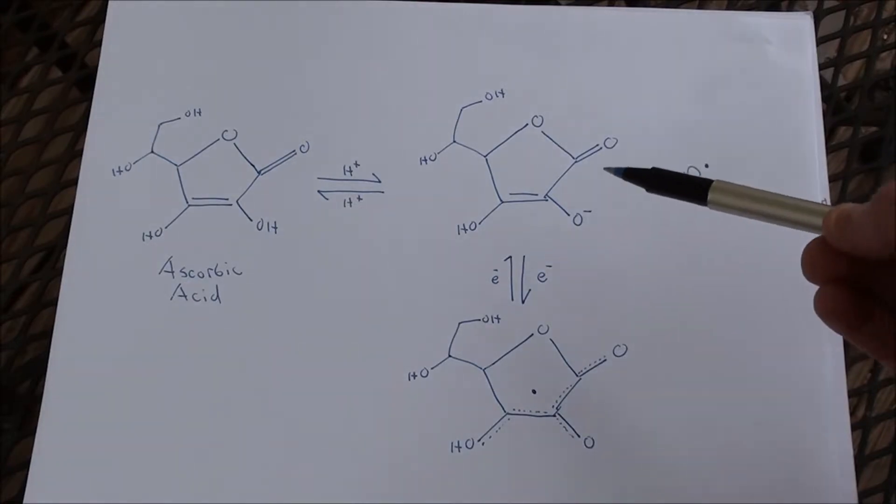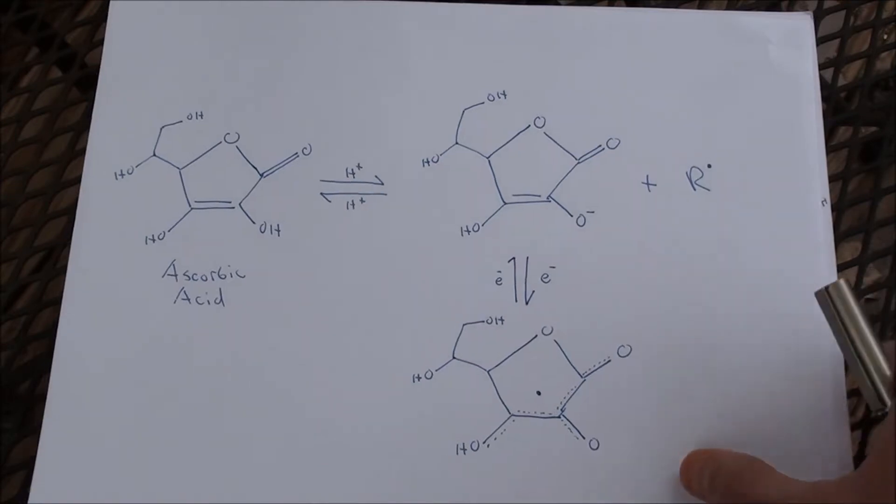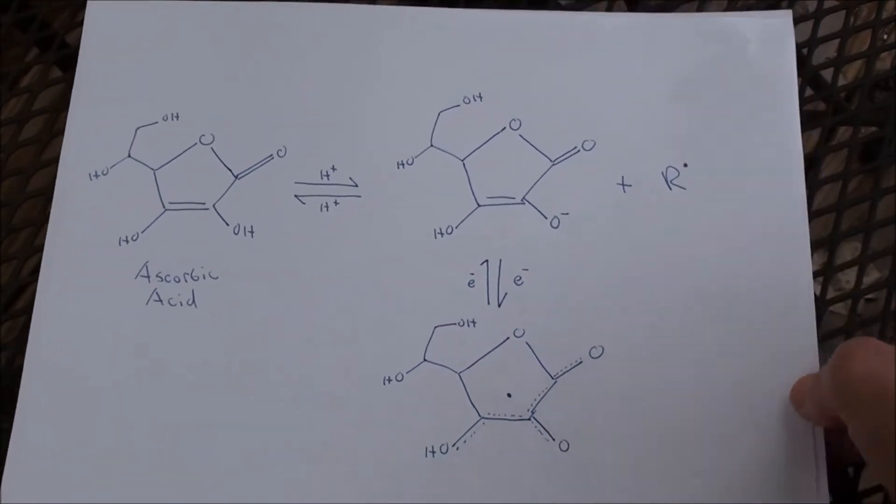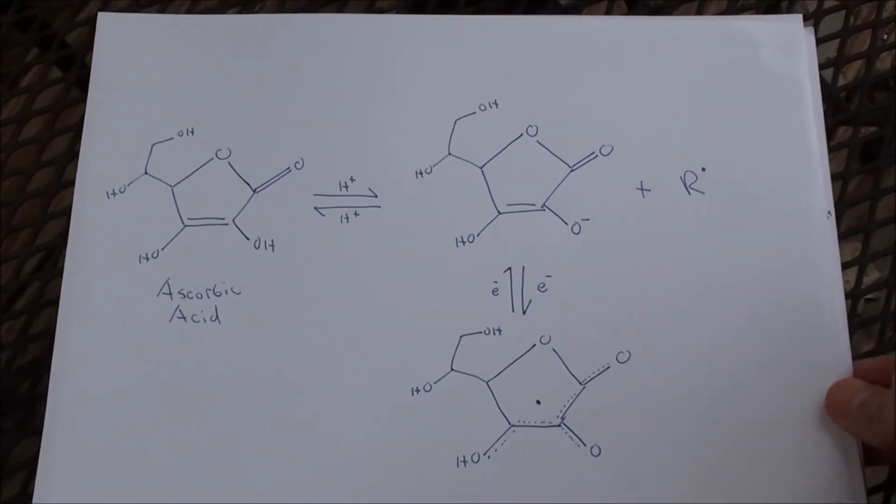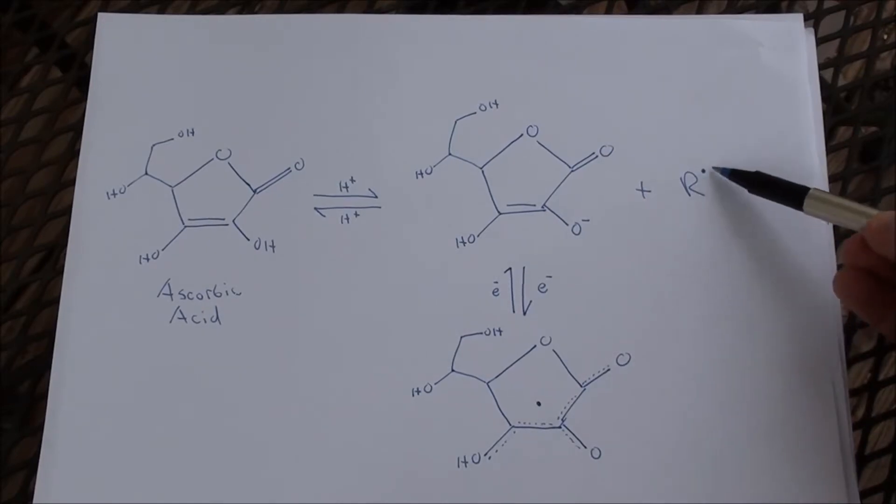So what this molecule wants to do is reach a lower energy state as quickly as possible. And the way it's able to do that in a unique way is when it encounters free radicals, which I designate here with an R, and here's the single lone electron.